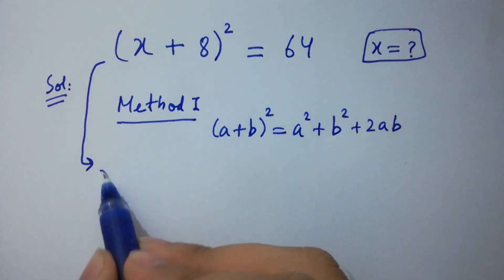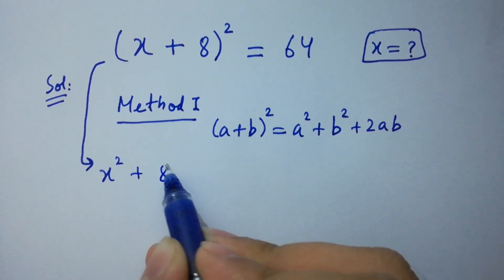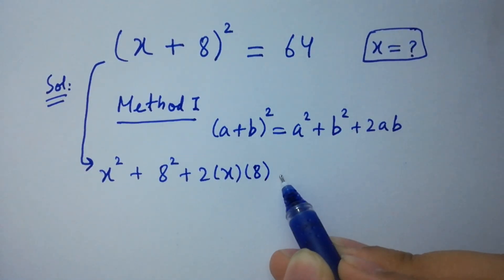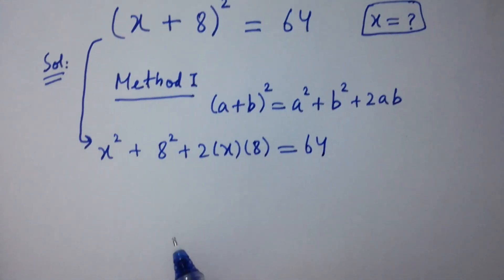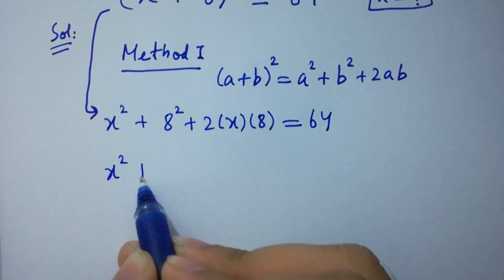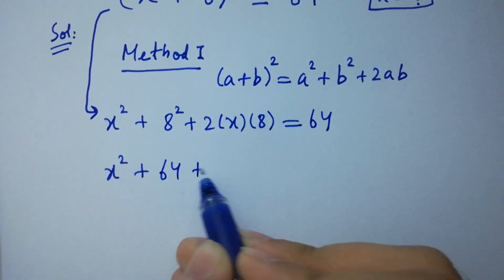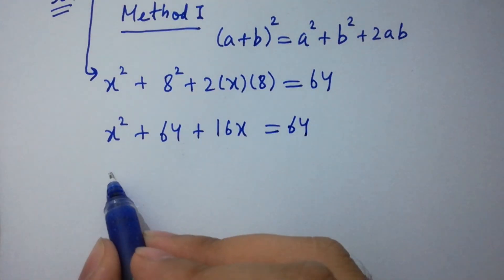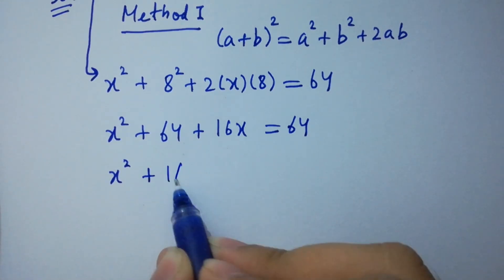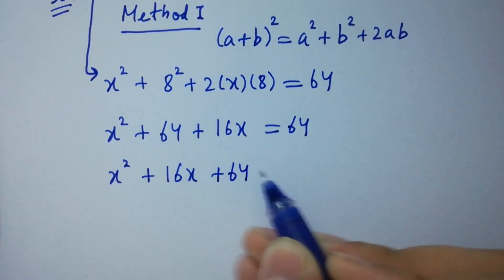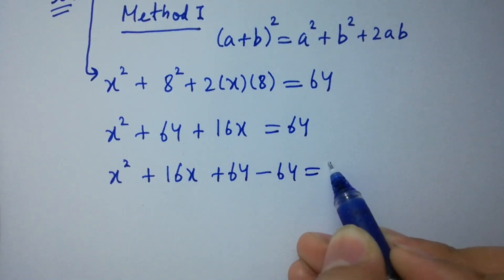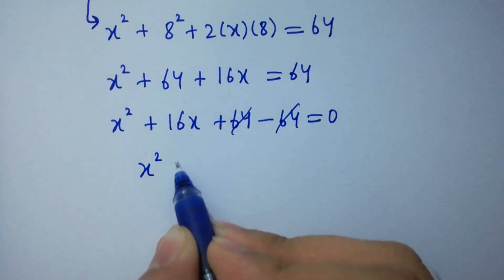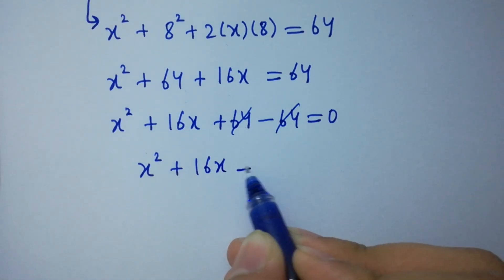We have x square plus 8 square plus 2 times x times 8 equal to 64. That gives x square plus 64 plus 16x equal to 64. Then x square plus 16x plus 64 minus 64 equal to 0. The 64s cancel, giving us x square plus 16x equal to 0.